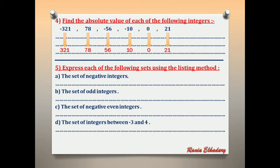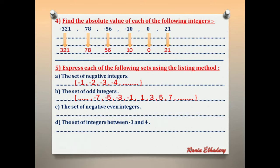Number 5: express each set using the listing method — write braces and write the elements inside. Letter A: the set of negative integers is {negative 1, negative 2, negative 3, negative 4, ...}. Letter B: the set of odd integers includes positive odds 1, 3, 5, 7, ... and negative odds negative 1, negative 3, negative 5, negative 7, ...